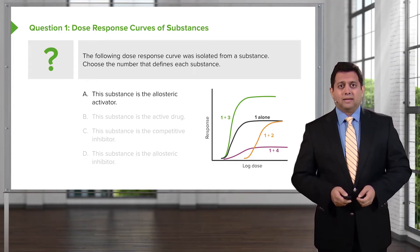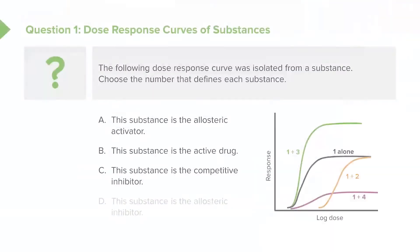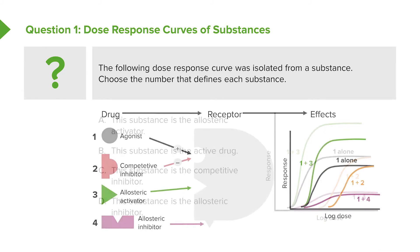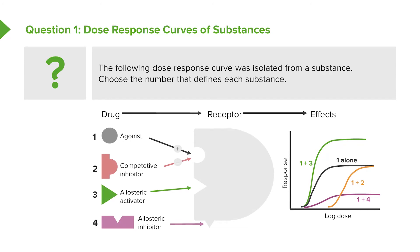One of them is an allosteric activator, one is an active drug, one is a competitive inhibitor, and one is an allosteric inhibitor. Before we answer the question, let's look at how drugs act on a receptor. The gray ball — the agonist — fits perfectly into a receptor bay. A competitive inhibitor fits into the same bay and blocks the agonist. An allosteric activator binds to a different place on the same molecule — 'allo' means different, 'steric' means shape — and activates the drug's activity. An allosteric inhibitor acts on a different part of the molecule but inhibits the drug's action.